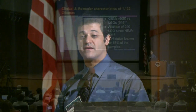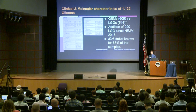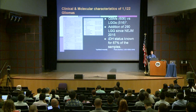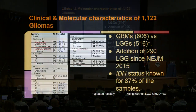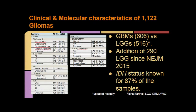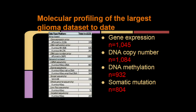The clinical and molecular characteristics of the glioma dataset we have through TCGA includes over 1,122 samples. The majority are GBMs, but there's an almost even mix between GBMs and LGGs. The new paper coming out in the New England Journal of Medicine profiled 289 LGGs; we've expanded that with an additional 290. IDH status is known for over 87 percent of the samples. We have a diverse set of platforms representing experiments going back historically from 2006, including gene expression, DNA copy number, DNA methylation, and somatic mutations.